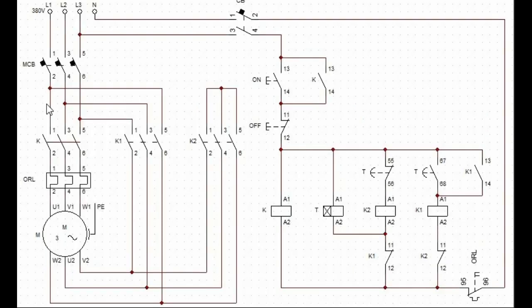First, let's see how the power circuit wiring is done before we move to the control circuit. Three phases L1, L2, and L3 enter the MCB input, and from the output of the MCB power is supplied to the input of contactor K.